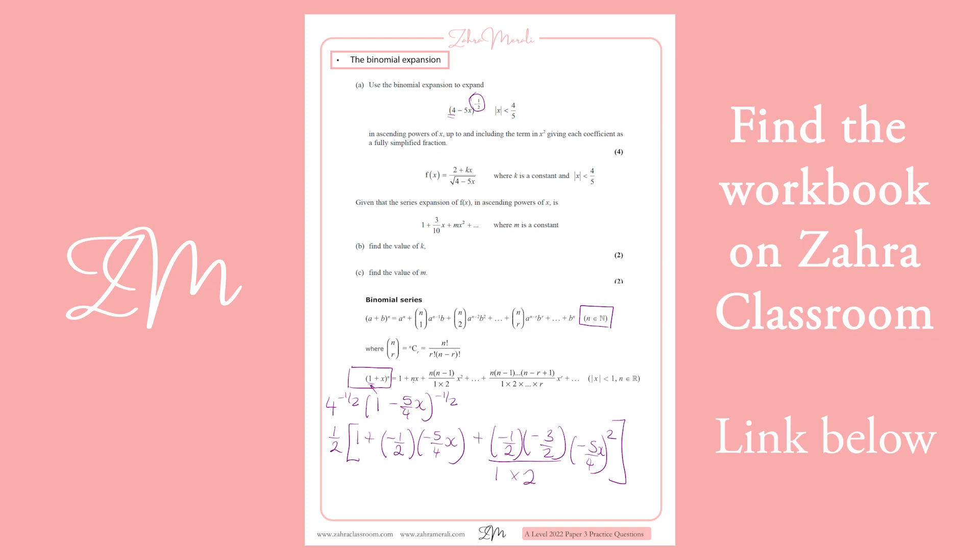And we want to go up to the x squared term. When we open all of that out, so we've got a half times 1, which is a half. And in your calculator, you can literally do a half times minus a half times minus 5 over 4, which is going to give you plus 5 over 16x.